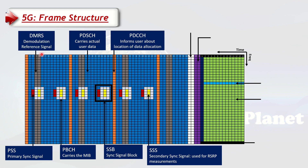Another aspect is the DMRS — the Demodulation Reference Signal. These are embedded in the PDSCH because the UE needs to use them to demodulate the PDSCH. They work as pilot signals that help the UE in decoding the PDSCH.